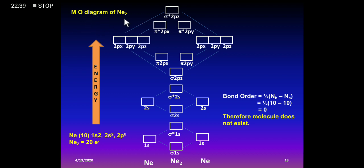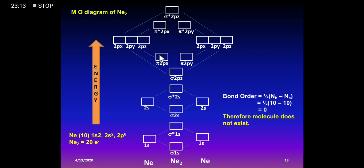Example: MO diagram of Ne2. Neon has atomic number 10 with electronic configuration 1s², 2s², 2p⁶. When Ne2 forms, total electrons = 10 × 2 = 20. Since this exceeds 15 electrons, we use the first MO ordering: σ1s, σ*1s, σ2s, σ*2s, σ2pz, π2px, π2py, π*2px, π*2py, σ*2pz. Drawing the diagram with Ne on each side and Ne2 in the center.